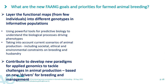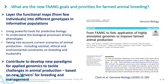What are today the new FANG goals and priorities for farm animal breeding? The idea is to layer the functional maps obtained from few individuals into different genotypes in informative populations. This implies using powerful tools for predictive biology to understand the biological processes driving phenotypes, and to take into account the current scenarios of animal production — including societal, ethical, and environmental constraints. The goal is to develop a new paradigm for applied genomics. Some priorities have been outlined in the recent FANG white paper published in late 2020.